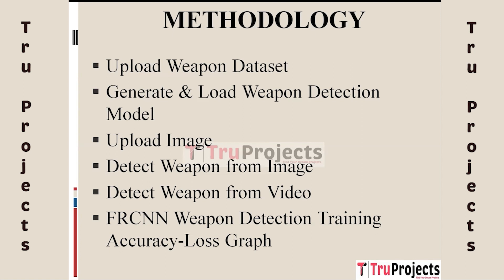The uploaded image will be processed by the loaded weapon detection model to determine if any weapons are detected within it. The fourth module is Detect Weapon from Image. Once an image is uploaded, this module utilizes the loaded Faster RCNN model to analyze the image and identify the presence of weapons. Detected weapons are highlighted using bounding boxes, providing a visual representation of the model's findings.